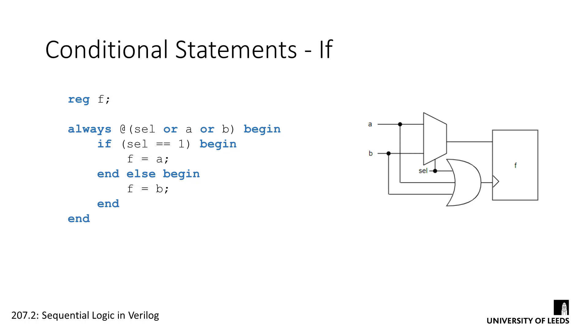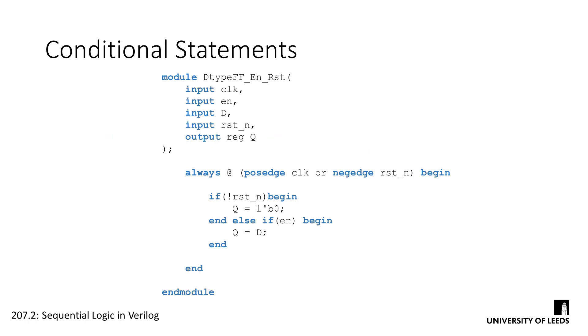In hardware, if statements can easily be thought of as a multiplexer which feeds into the flip-flop. The code here shows a modified version of the D-type flip-flop, which uses an if statement to implement reset and enable functions.